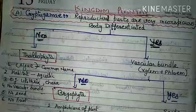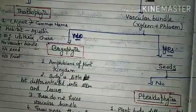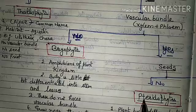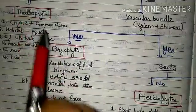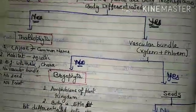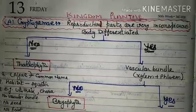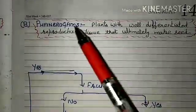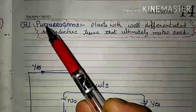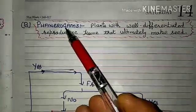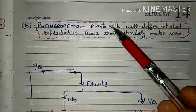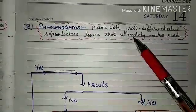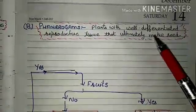Cryptogamia includes three divisions: Thallophyta, Bryophyta, and Pteridophyta. The other group is known as Phanerogamia, which means plants with well-differentiated reproductive tissue that ultimately makes seeds.